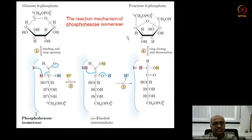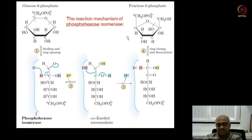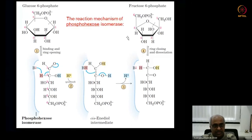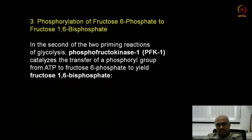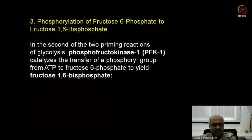We will go through at least four different reaction mechanisms here, and one of them will come in the exam. The third step is another priming stage — one more phosphate gets added. Fructose-6-phosphate becomes fructose-1,6-bisphosphate, meaning the second phosphate is added to a hydroxyl group on a different carbon of fructose, not to the first phosphate.